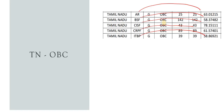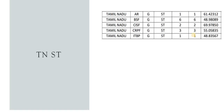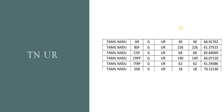You can select the EWS. Assam Rifle, BSF, CSF, CRPF, ITBP — 48. The video is covered in SSB and the UR category is covered in the video.